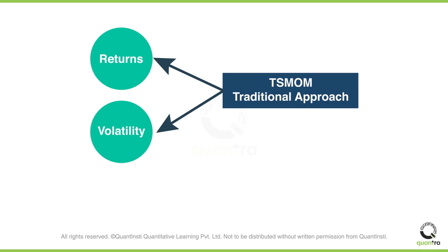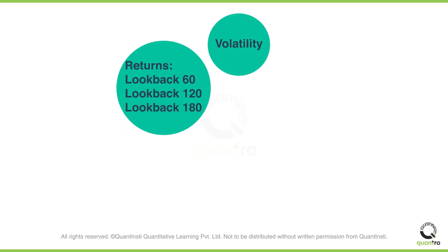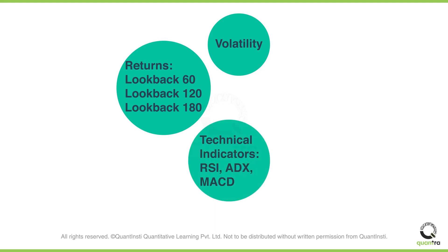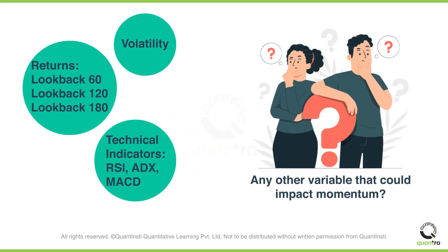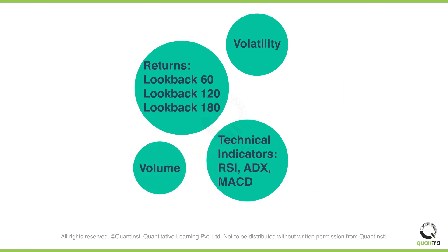For instance, in addition to volatility and returns for the past 12 months, we may also consider the returns for the past 60 days, 120 days, and 180 days. We can also consider momentum indicators such as RSI, ADX, and MACD. We could also consider the volumes — we can directly use the volume data and also use volume indicators like on-balance volume.